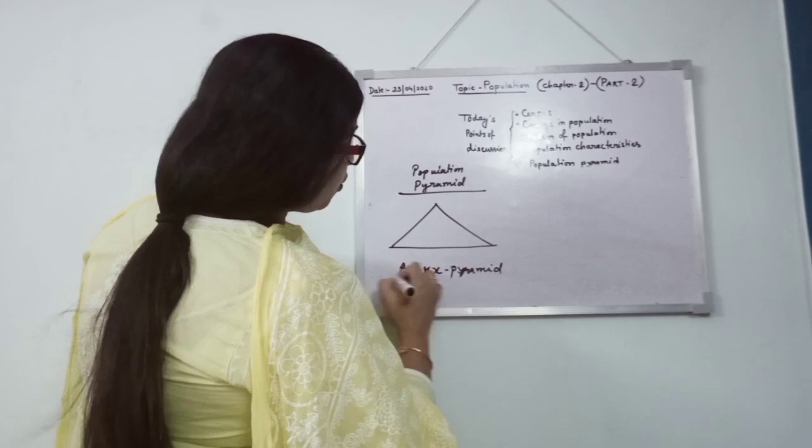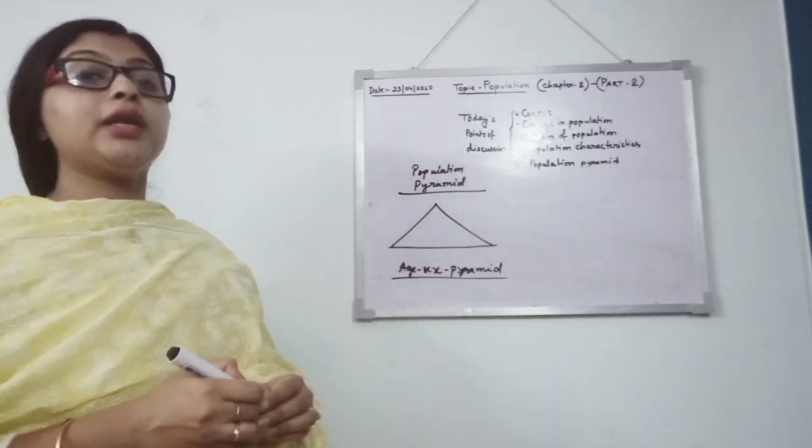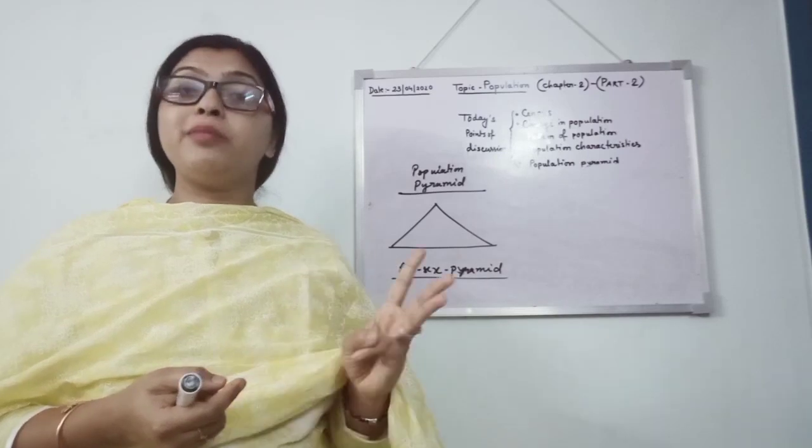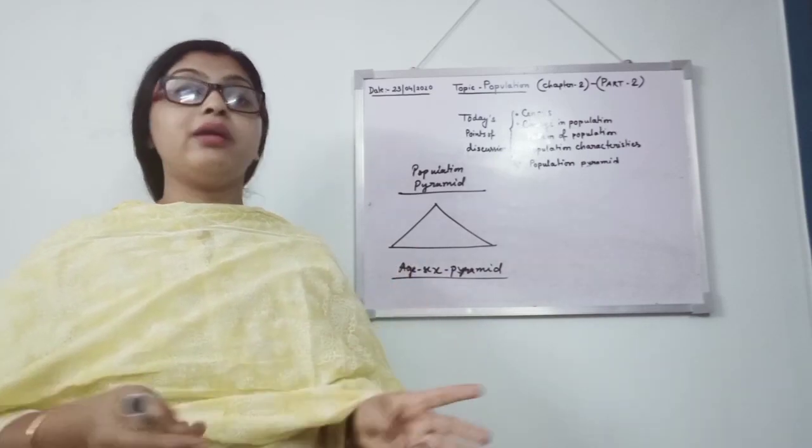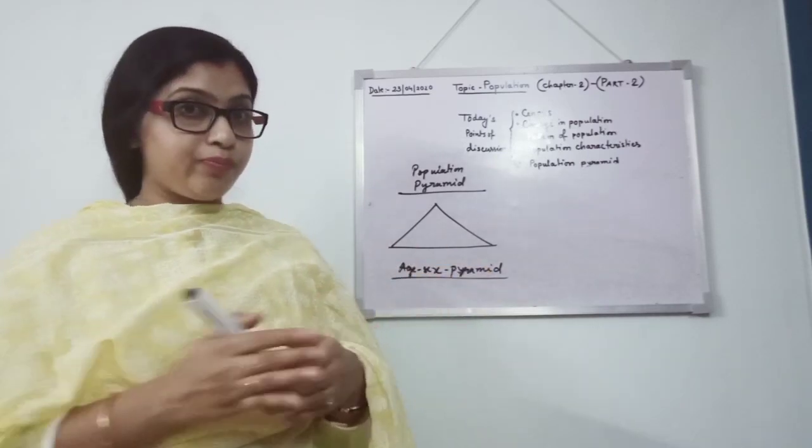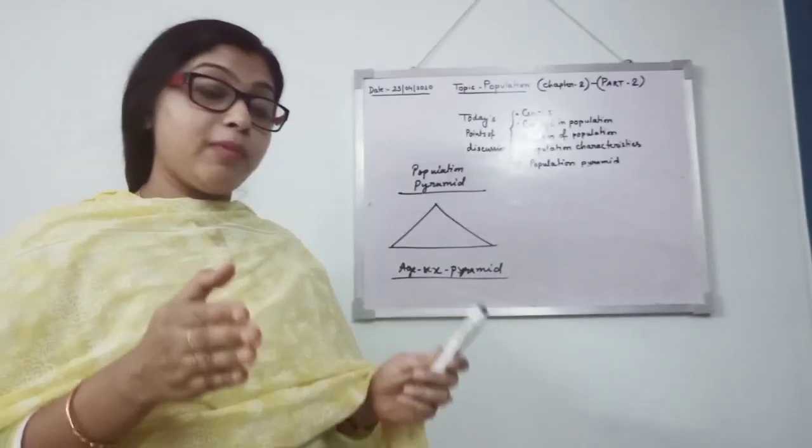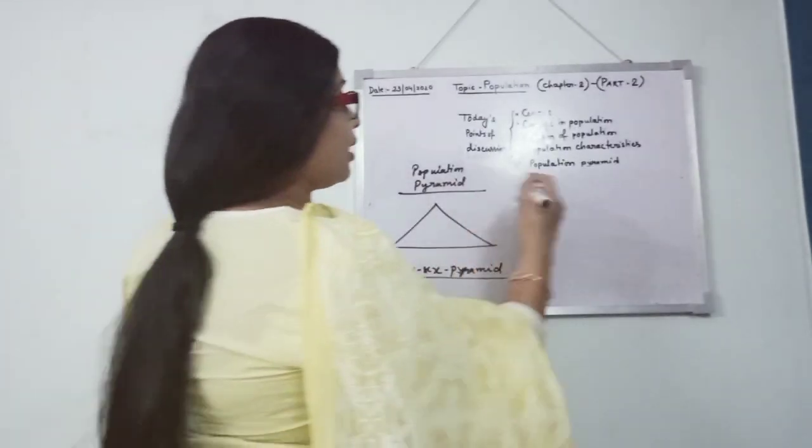Through that we can get to know different characteristics of population like birth rate, death rate, number of females, number of males, and different age groups. Every country is not having the same kind of pyramid. Some of the countries are having the pyramid like: